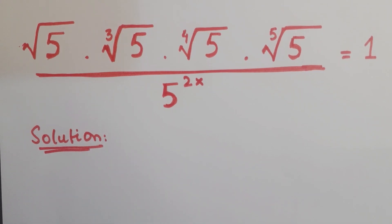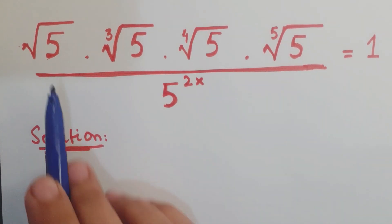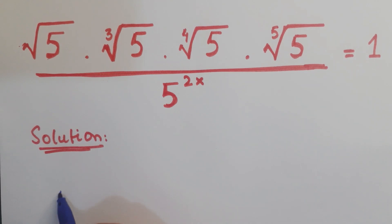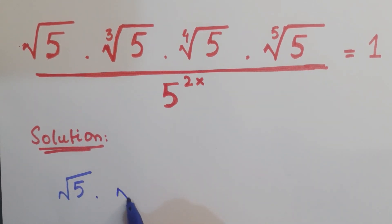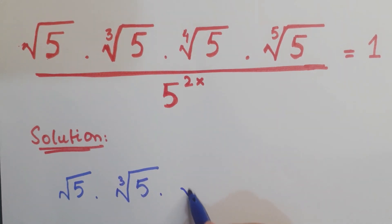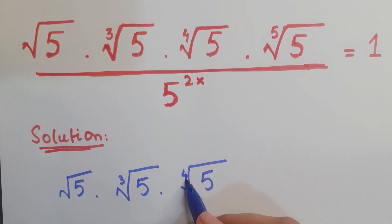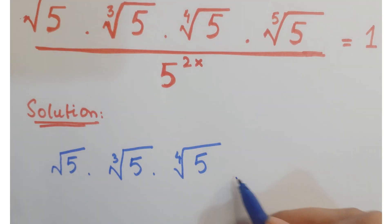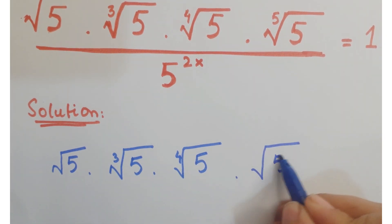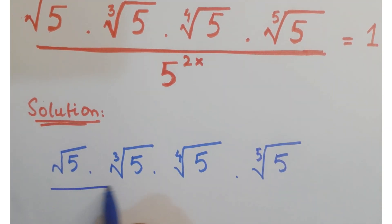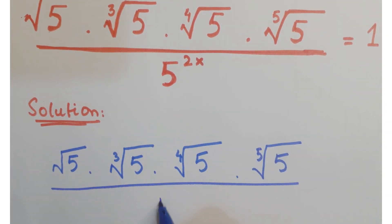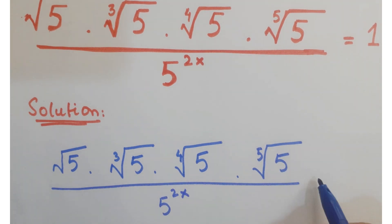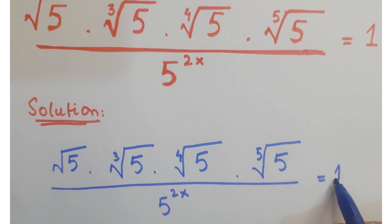Hi guys, look at this question. The question is: square root of 5 into cube root of 5 into 4th root of 5 into 5th root of 5, upon 5 to the power 2x, is equals to 1.